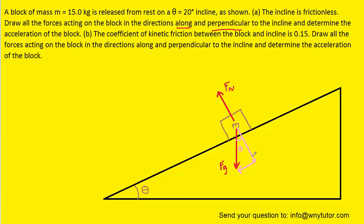The perpendicular component is adjacent to the angle theta, so if we were deciding between sine and cosine, we would choose cosine, because cosine contains the adjacent in its formula. So this component will be FG times the cosine of theta. Then the parallel component, which is opposite to the angle, would involve the sine — so that would be FG times the sine of theta.